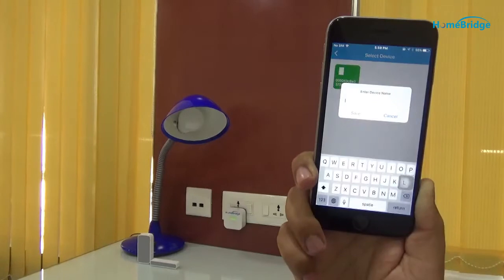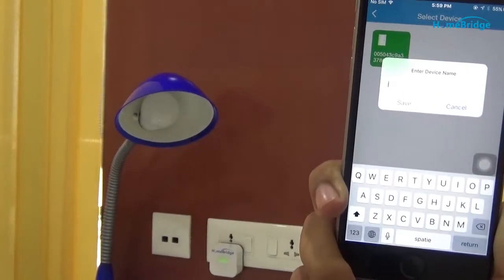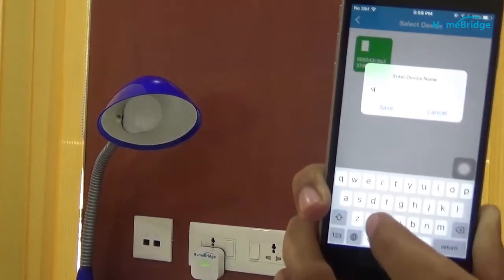Let's give name to the door sensor. For that, tap on a discovered device and name it as front door and move ahead.